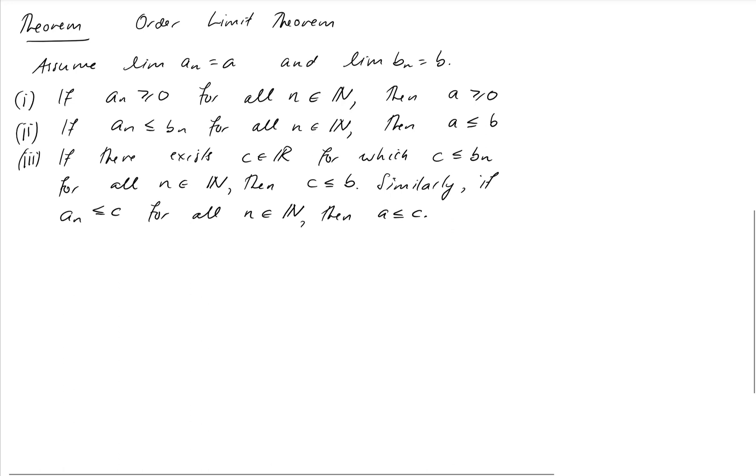The first one says that if my sequence terms are non-negative, then my limit itself must also be non-negative. That's good. So it means that I cannot have a negative limit and have all of my terms being positive at the same time.